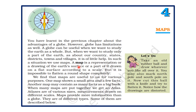As we all know, the shape of the earth is a sphere. It is not possible to flatten a spherical thing, so when we draw a map on a flat surface, the shape of many features of the earth gets distorted.